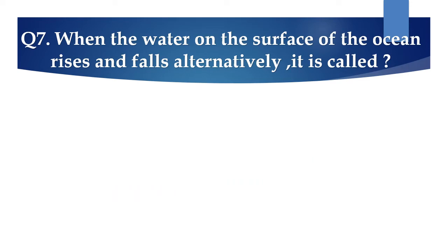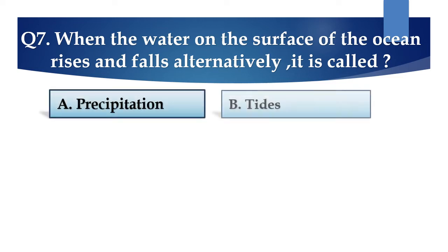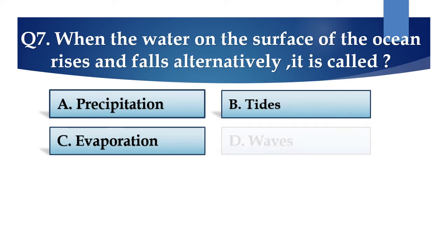Question number 7: When the water on the surface of the ocean rises and falls alternatively, it is called: A. Precipitation, B. Tides, C. Evaporation, or D. Waves.